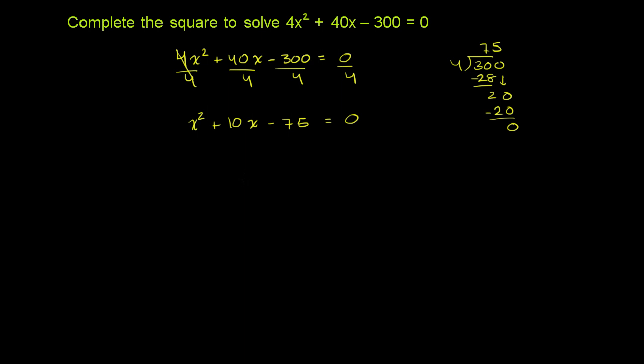And right when you look at this, just the way it's written, you might try to factor this in some way. But it's pretty clear this is not a complete square, or this is not a perfect square trinomial. Because if you look at this term right here, this 10, half of this 10 is 5. And 5 squared is not 75. So this is not a perfect square.